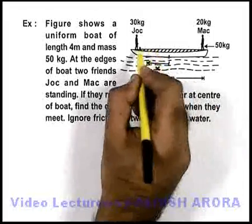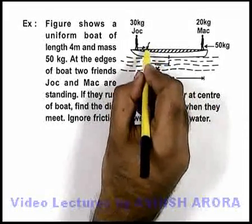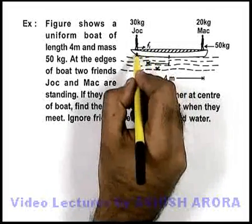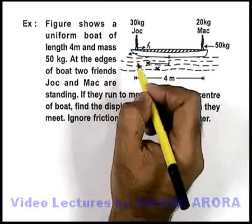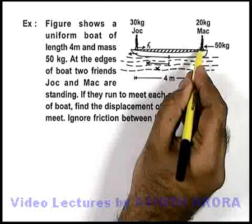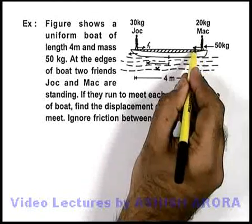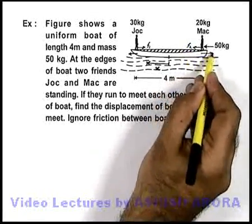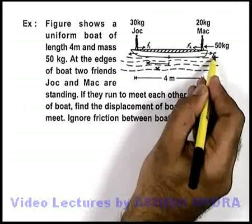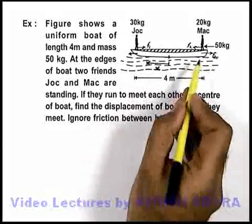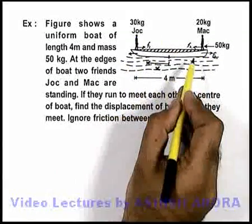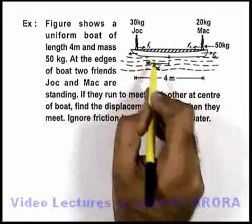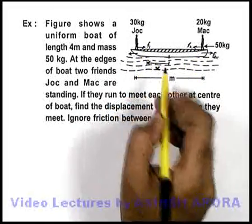Jock is moving toward the right, so the friction on it will be toward the right, and the boat will experience a reaction friction in that direction. Mac will move toward the left, so its friction force F2 means the boat will also experience friction F2. As no external force acts on the system, the internal friction forces will not displace the centre of mass.